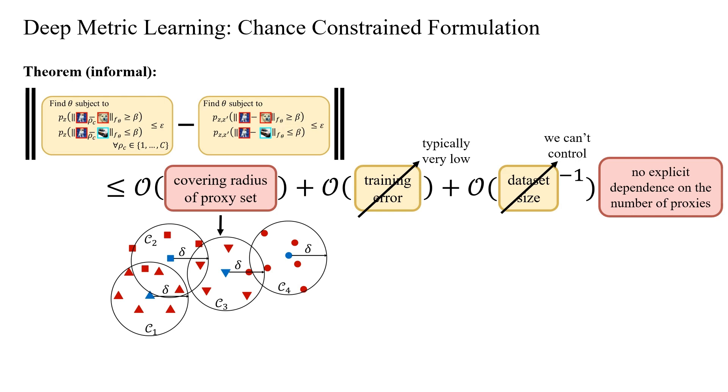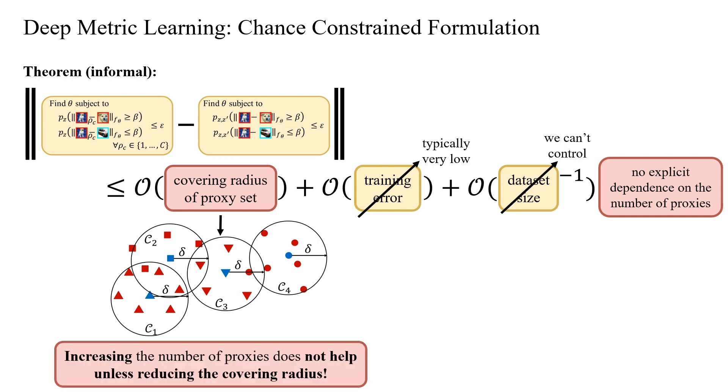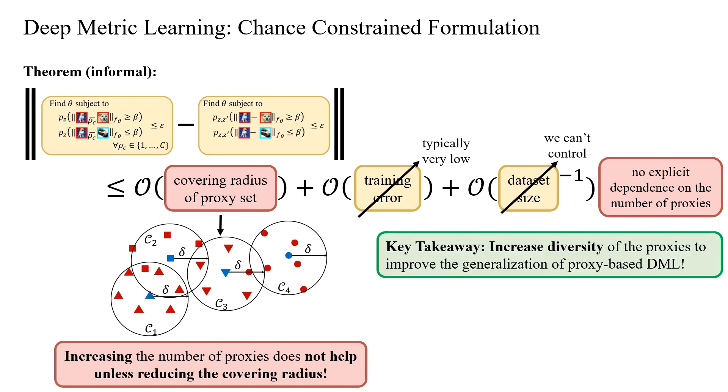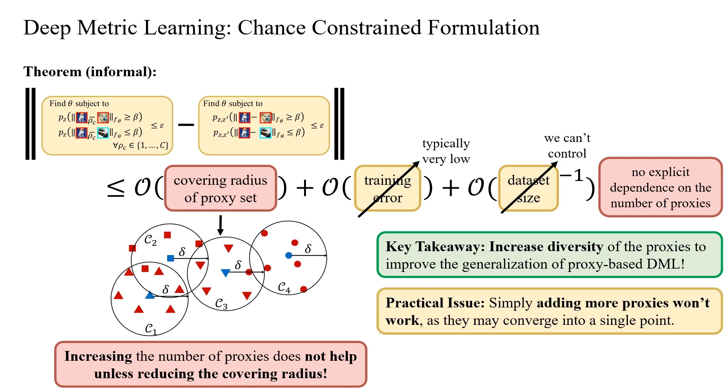Interestingly, increasing the number of proxies doesn't improve generalization unless we concurrently reduce the covering radius. The key takeaway: enhance proxy diversity to boost the generalization of proxy-based deep metric learning. However, it's not as simple as adding more proxies as they may converge into a single point. The practical challenge lies in ensuring the meaningful expansion of proxy diversity without convergence issues.